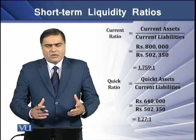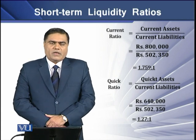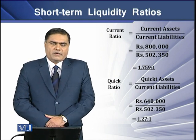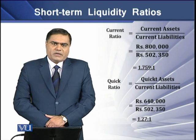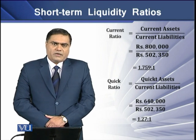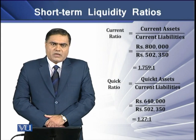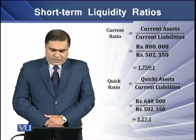The ratio is fairly good. Accountants agree that a firm should at least have quick assets equal to its current liabilities, i.e., a quick ratio of 1:1.